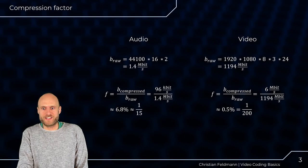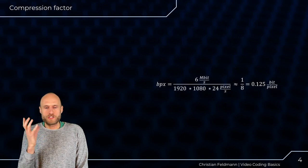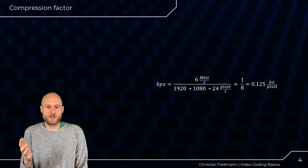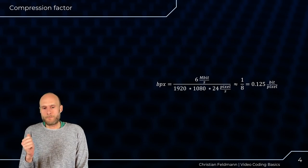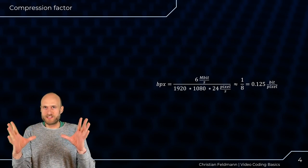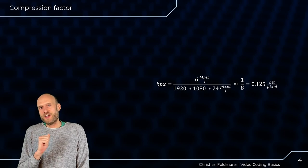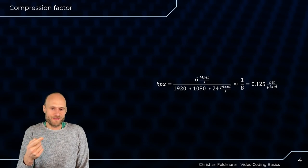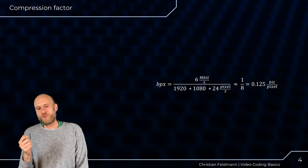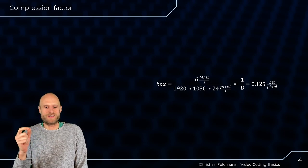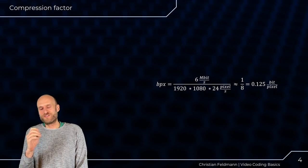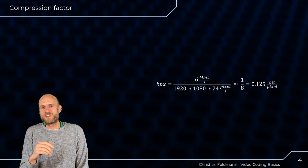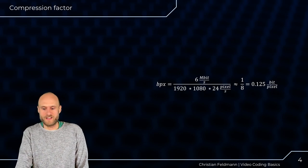Another mind-boggling thing: how many bits are actually transmitted per pixel update on your screen. For a 1080p video at 24 fps, dividing the compressed bitstream size by the total pixel updates gives about 0.125 bits transmitted per pixel per frame. For modern codecs, that's even far less — a fraction of a bit per pixel update. Really impressive.